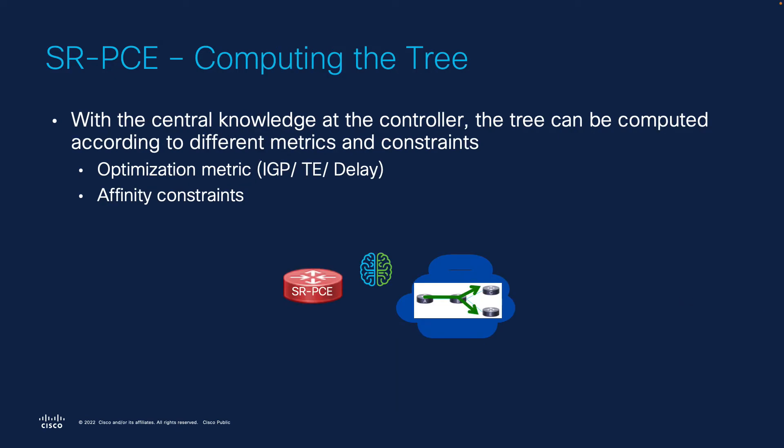And lastly, since SRPCE has all the needed information, it can compute the tree according to different metrics and constraints, such as optimization metrics, IGP, TE delay, or affinity constraints.